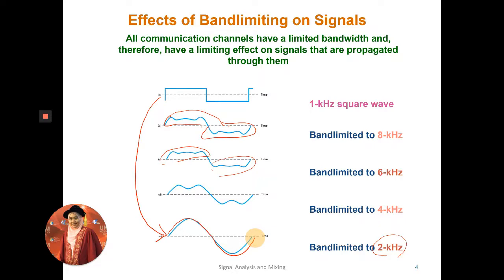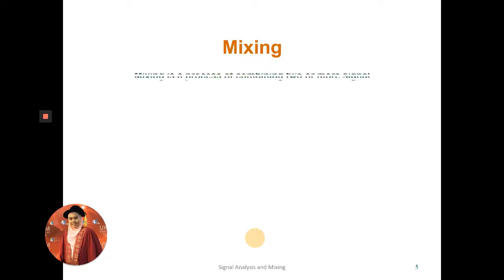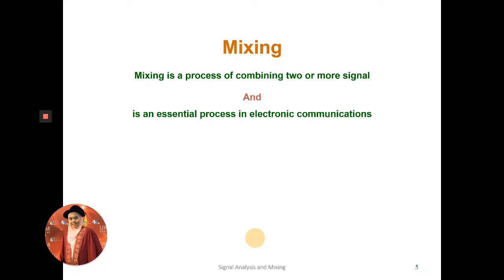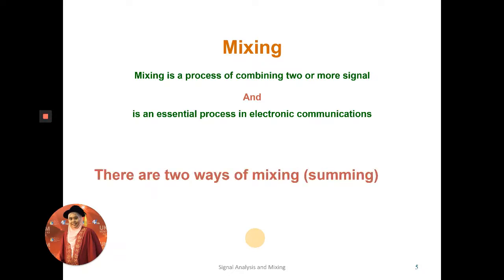Next is the mixing process. As we know, the modulation process is essentially a mixing of two signals: the information signal and the carrier signal. Mixing is the process of combining two or more signals, and it is a very essential process in electronic communication systems. There are two methods of mixing.